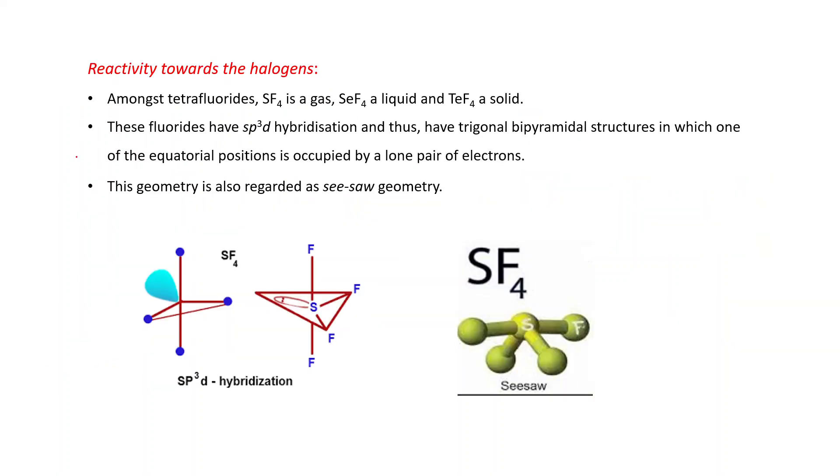If we talk about the tetrafluorides, SF4 is gas, SeF4 is liquid, and TeF4 is solid. In these fluorides, hybridization is sp3d. And when hybridization is sp3d, the structure is trigonal bipyramidal.